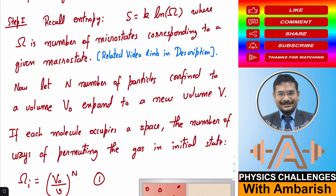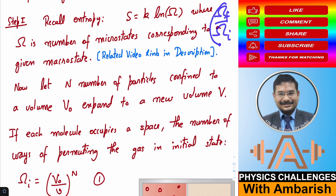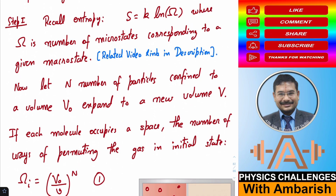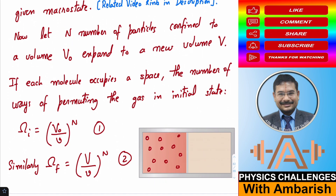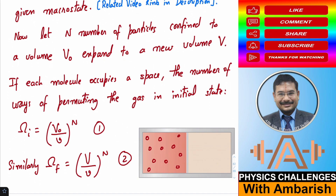From this formula, ΔS = k·log(Ω_final) − k·log(Ω_initial) = k·log(Ω_final / Ω_initial). We need the ratio of permutations in the final and initial states. Let N be the number of particles confined to initial volume V₀. If each molecule occupies a small volume v, the number of spatial placeholders in volume V₀ is V₀/v.